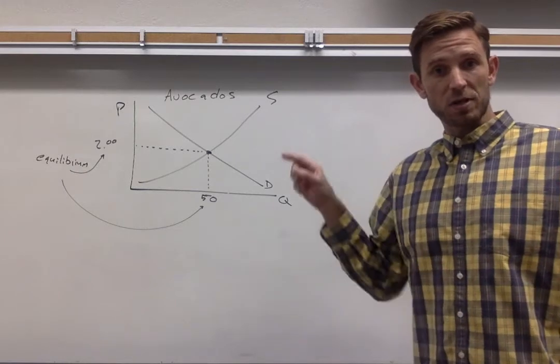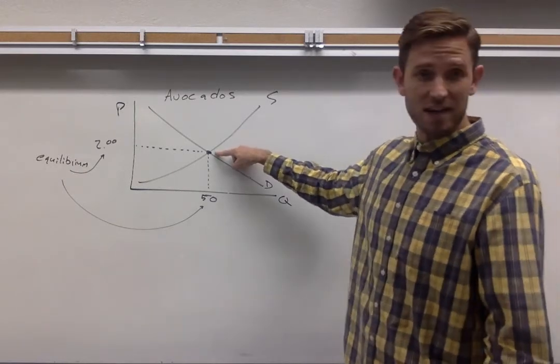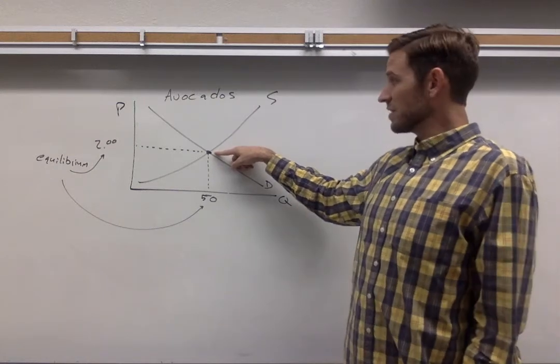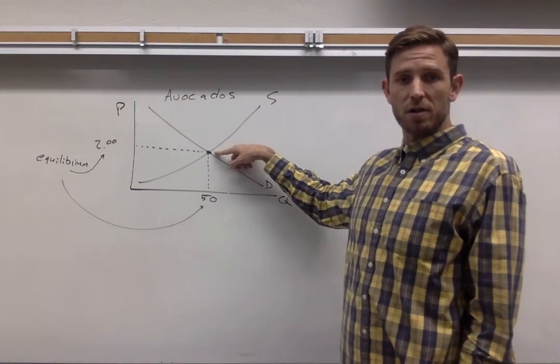As with a lot of things in economics, you want to take a look at this particular spot where our lines are intersecting, this spot right here. On the graph that we're dealing with, this represents the equilibrium in the market for avocados.